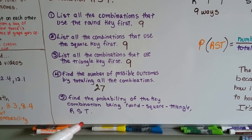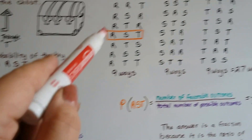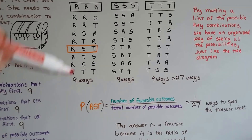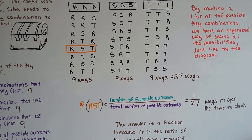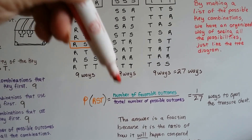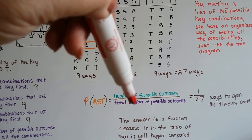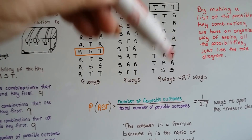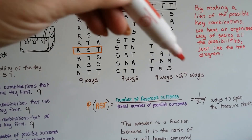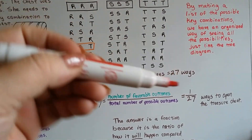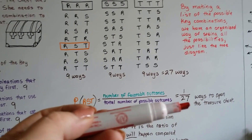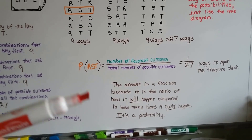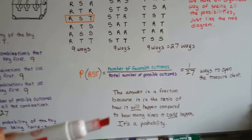Now we find the probability of the key combination being round, square, triangle. Because there are 27 ways, the probability of the event being round, square, triangle is the number of favorable outcomes over the total number of possible outcomes. There is one favorable outcome over a total of 27 possible outcomes. So we have a 1 in 27 chance — or 1/27 — of opening the treasure chest. The answer is a fraction because it's a ratio of how it will happen compared to how it could happen.